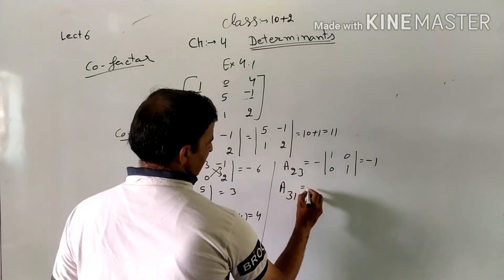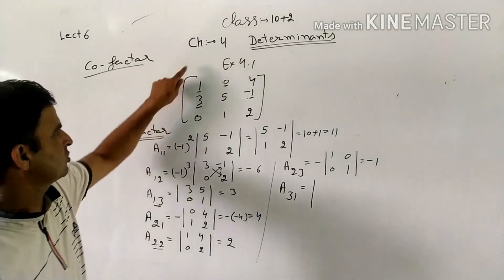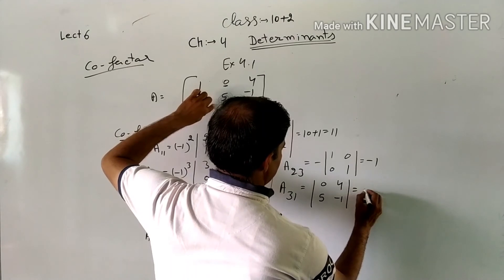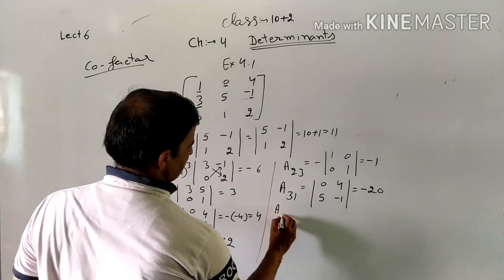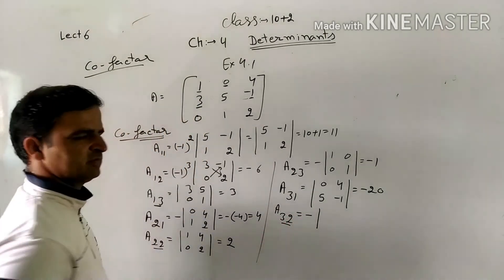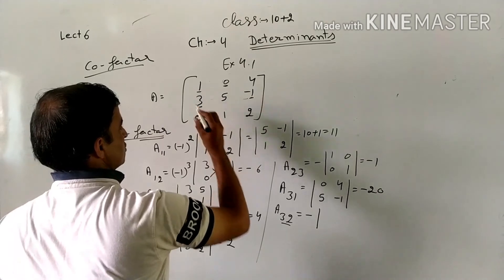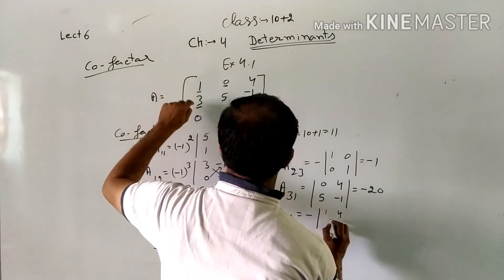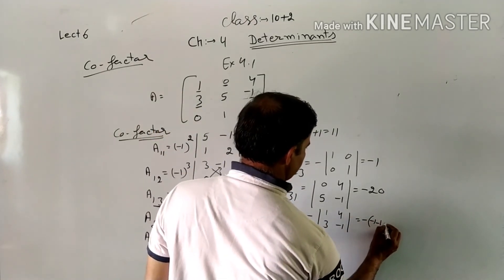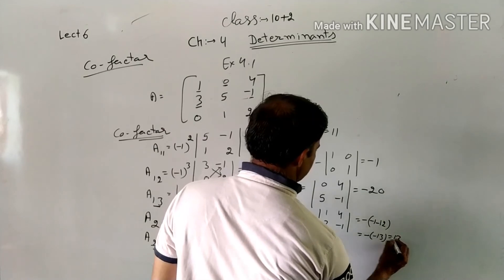A31: sum 3+1=4, even, no minus. Position 3,1. Deleting gives [3, 0; 5, 1]. Determinant = 3 - 0 = 3. A32: odd sum 3+2=5, minus applies. Position 3,2. Deleting row 3 and column 2 leaves [1, 0; 0, 1] — gives [1, 4; 3, -1]. Minus × (1×(-1) - 4×3) = minus × (-13) = +13.